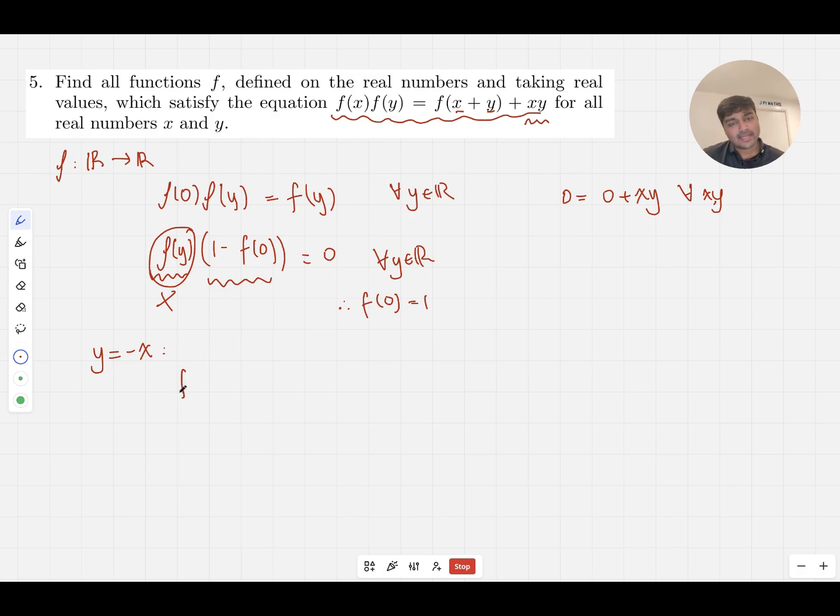Well, if we do this, we get f(x) multiplied by f(-x) equals f(0), which we've just worked out is one, and then x times minus x is minus x squared. So f(x) times f(-x) equals 1 - x². And this is kind of nice. This tells us that if f is a function that satisfies this equation up here, we must have f(x)f(-x) = 1 - x².